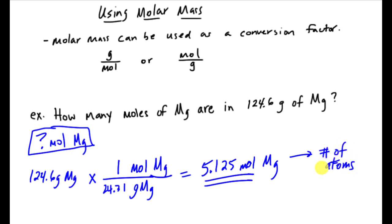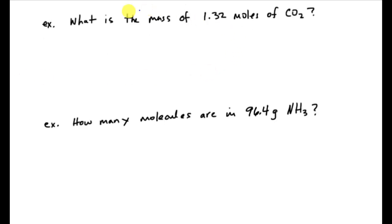Okay, so let's take a look at another example. Okay, so two more examples here. What is the mass of 1.32 moles of carbon dioxide? Okay, so this time I'm looking for the mass of carbon dioxide. So we start with that. I'm given 1.32 moles of CO2. So my first step is to set up my conversion factor. Put down the unit that I have here, which is mole of CO2.